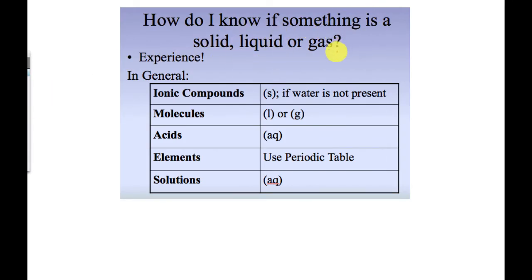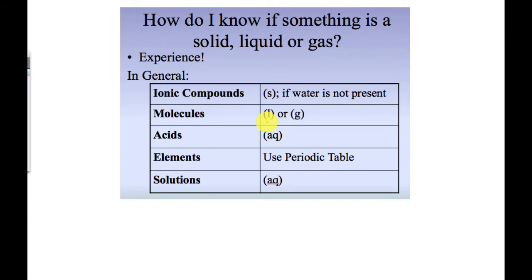When writing chemical reactions from book problems, students often ask how to determine the state of matter. In general, if it's an ionic compound, it will be a solid unless water is present. Molecules tend to be liquids and gases — water is a liquid, carbon dioxide is a gas, table salt is a solid. For acids, always use aq, because acids will almost always be dissolved in water.